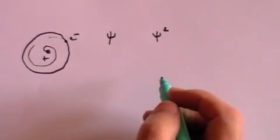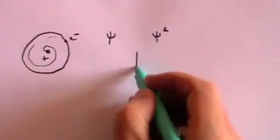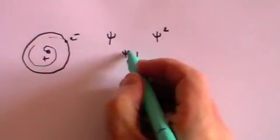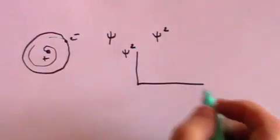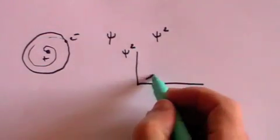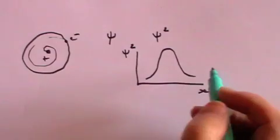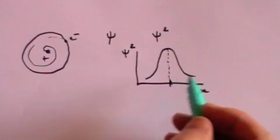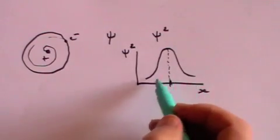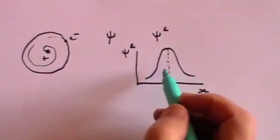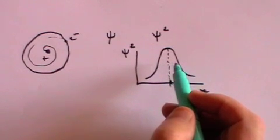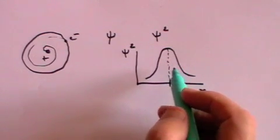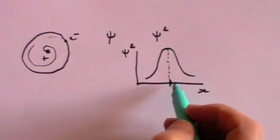is a representation of where you find the electron. If psi squared against location looks something like this, that means you're most likely to find the electron at this location, but not necessarily. It could be anywhere under that curve, but psi squared is simply a measure of the probability of finding the particle at that point.